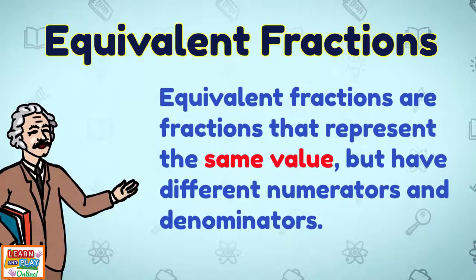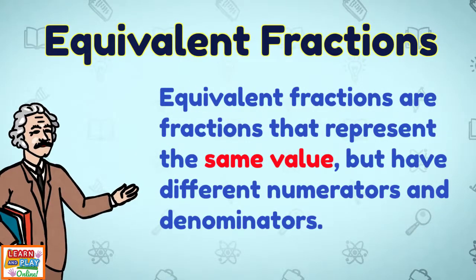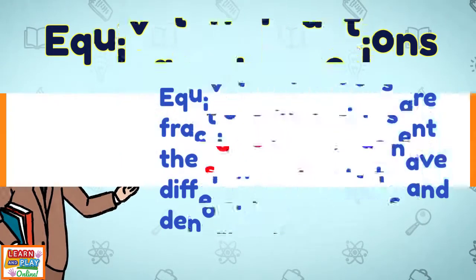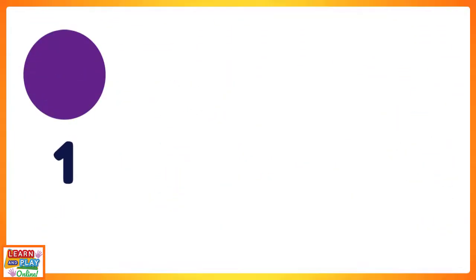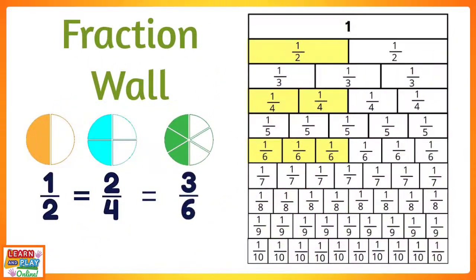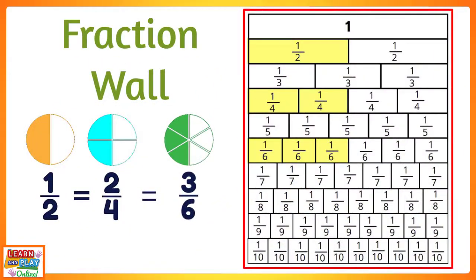Equivalent fractions are fractions that represent the same value but have different numerators and denominators. In our first video, we used visual representations starting with a whole circle. From there, we divided the same size circle into different equal parts and we were able to determine that one half is equivalent to two quarters, three sixths, and four eighths, as you can see in the visuals on the screen. We also made use of the visuals on a fraction wall to show the same concept.